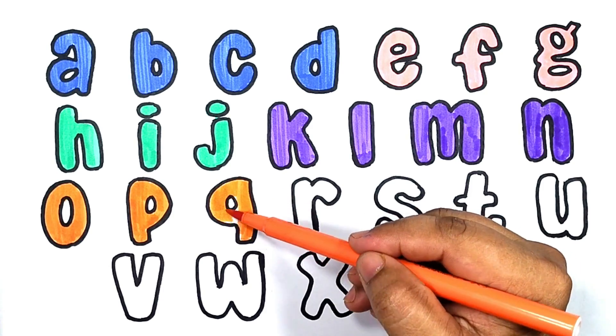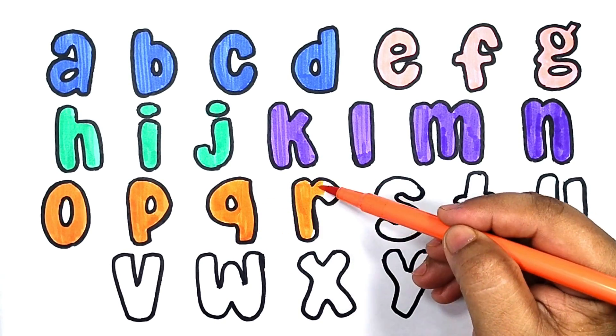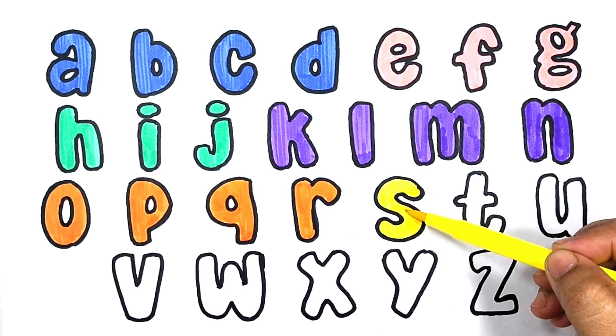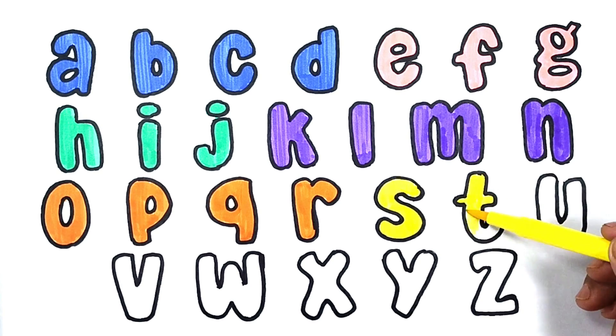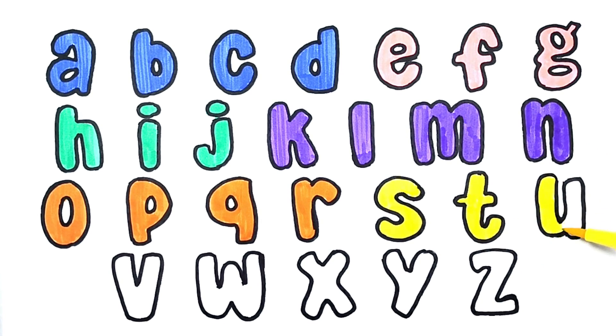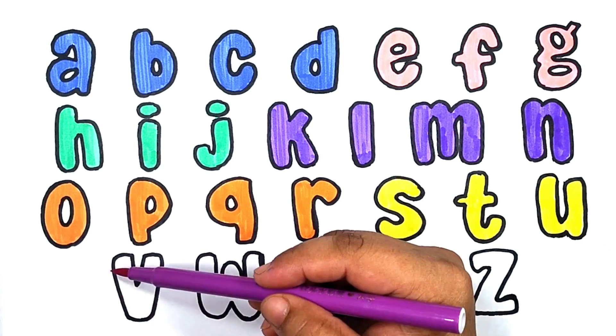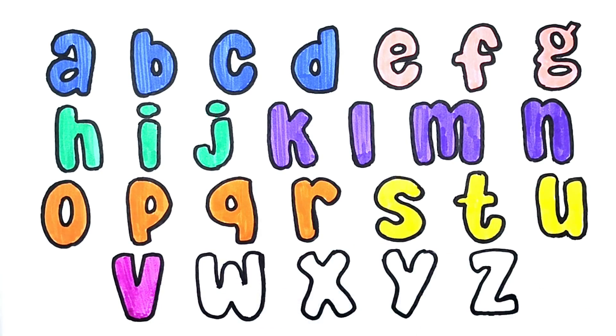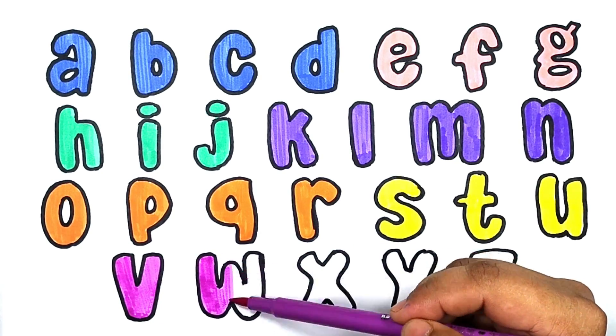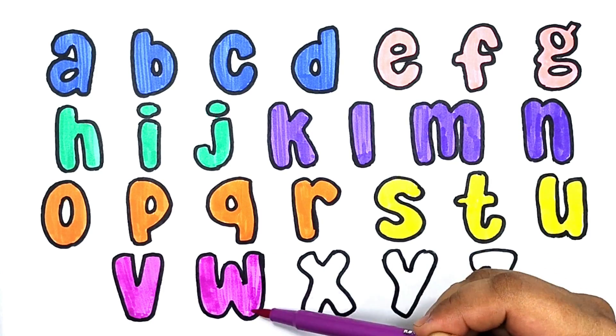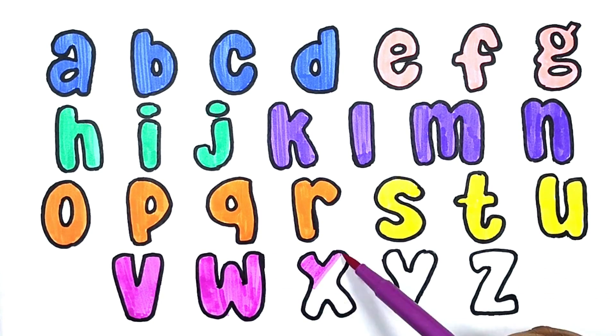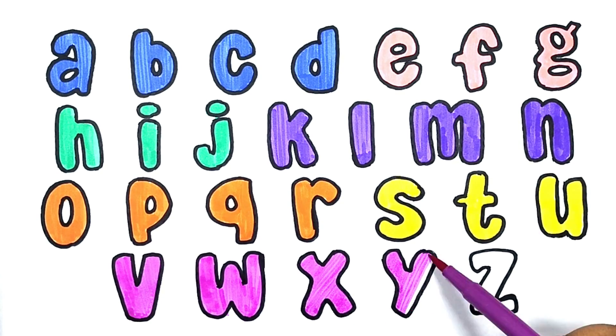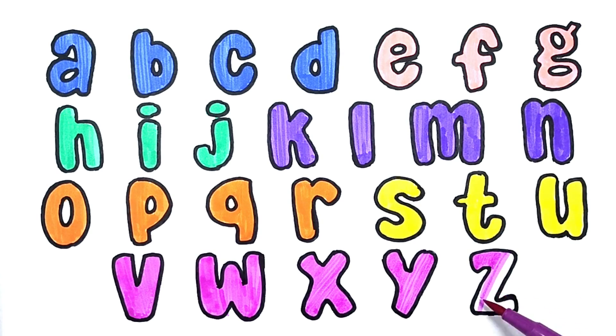Q is for queen. R is for ring. S is for star. T is for train. U is for umbrella. V is for vulture. W is for watch. X is for xylophone. Y is for yacht. Z is for zebra.